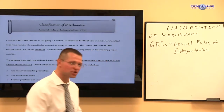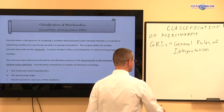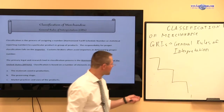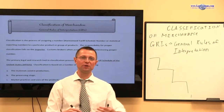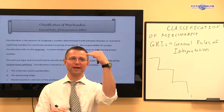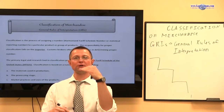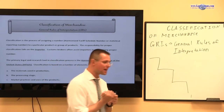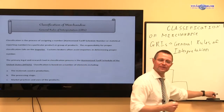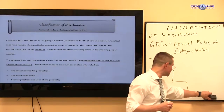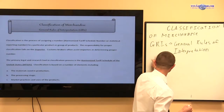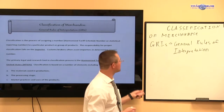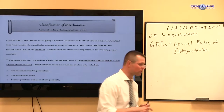We previously talked about the classification tables and how we read them, and we established a step-by-step approach where we need to start from the top and narrow down based on the content and the facts. But that alone may not be enough — and why not? Because it is subject to the General Rules of Interpretation.